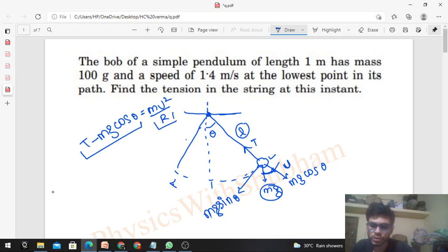From here, you will get the value of tension as mv² over r plus mg cos θ. This will be the tension. If you know the value of v and θ, you can easily find out the value of tension.